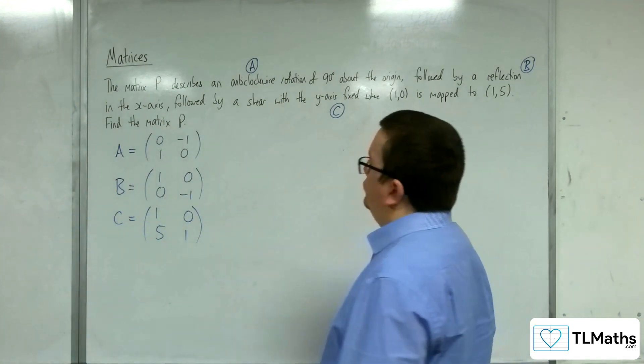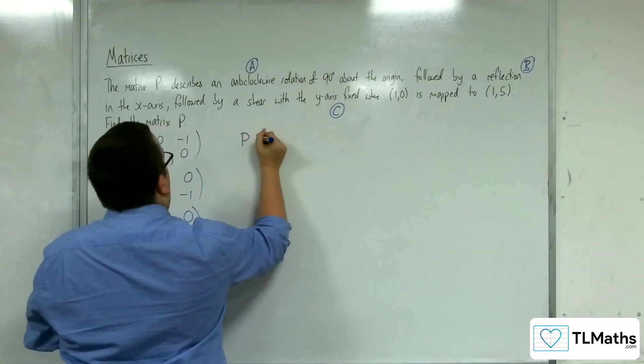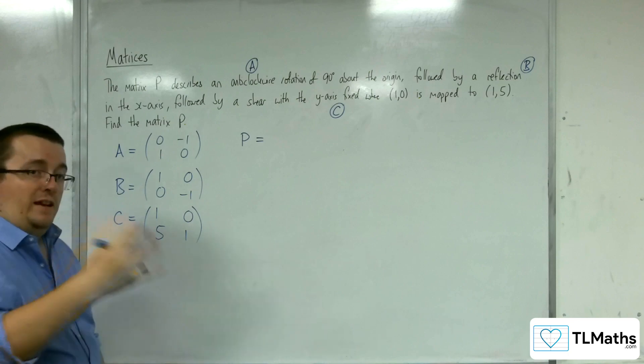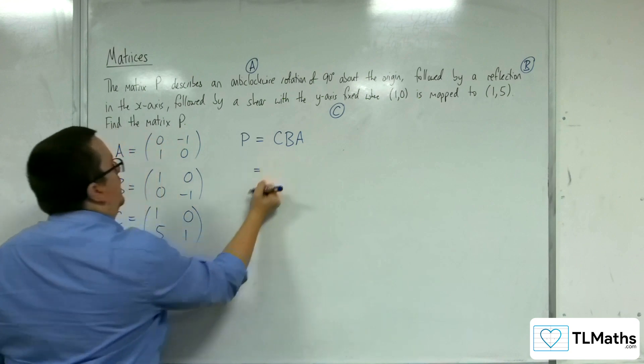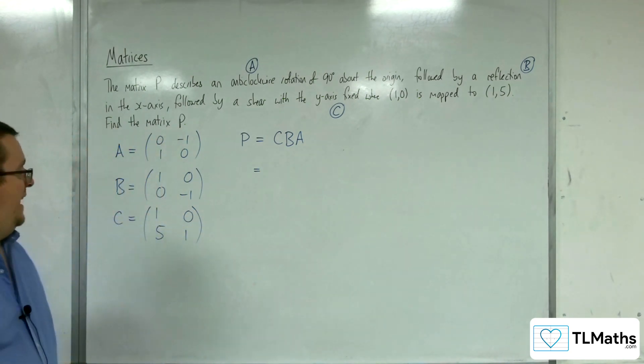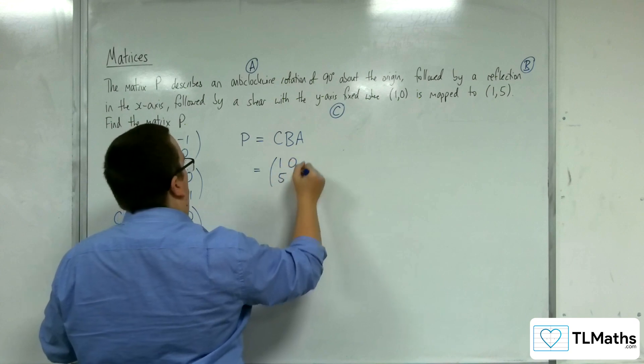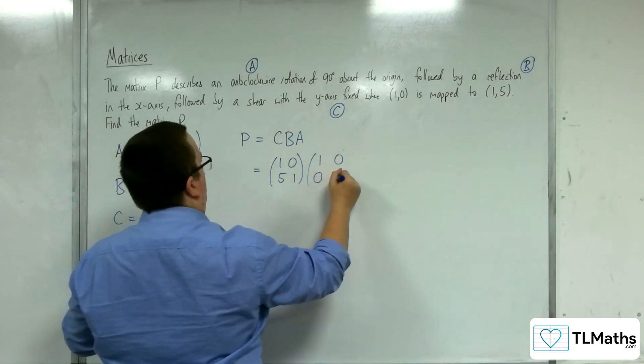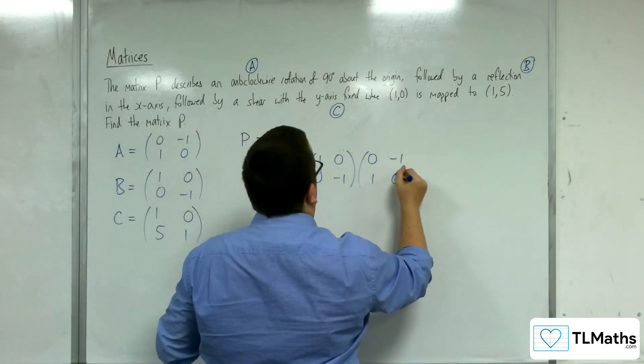So P then, if we are starting with A and then B and then doing C, then we want C, B, A. We're multiplying the matrices in that order. So we have 1-0-5-1 multiplied with 1-0-0 minus 1 multiplied with 0-1 minus 1-0.